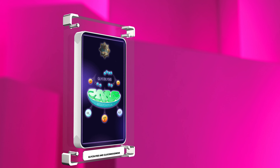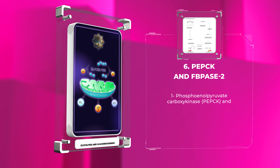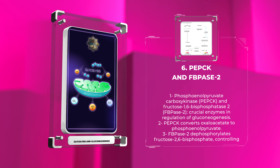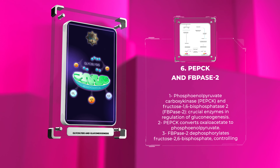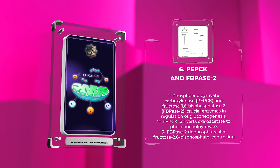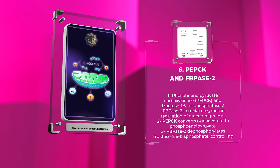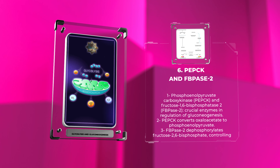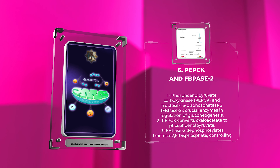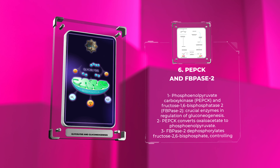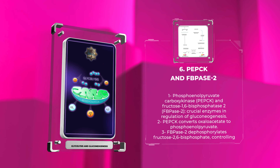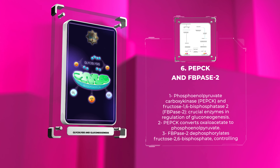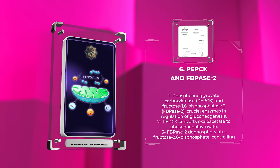Phosphoenolpyruvate carboxykinase (PEPCK) and fructose 1,6-bisphosphatase-2 (FBPase-2) are crucial enzymes in the regulation of gluconeogenesis. PEPCK catalyzes the conversion of oxaloacetate to phosphoenolpyruvate, and FBPase-2 dephosphorylates fructose 2,6-bisphosphate, ultimately controlling the rate of glucose production in the liver and kidneys.